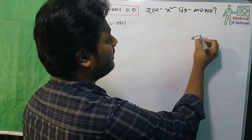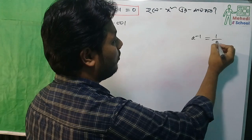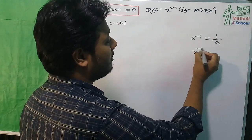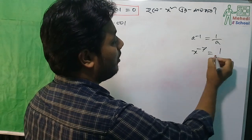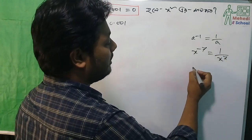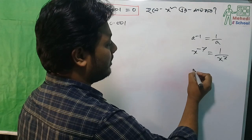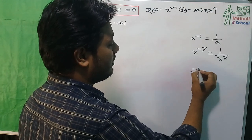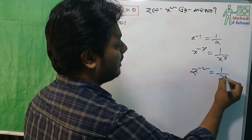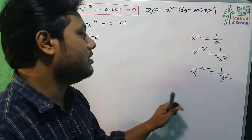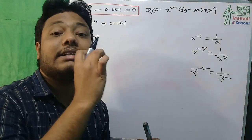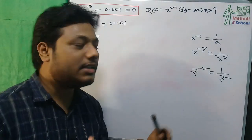x to the power minus 1, write 1 by x to the power minus 7, write 1 by x to the power 7 to x to the power minus 2, write 1 by z square minus 1 among x are minus 2 of s2 is 0, 1 by 6.